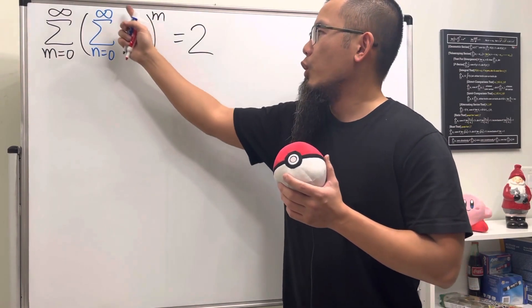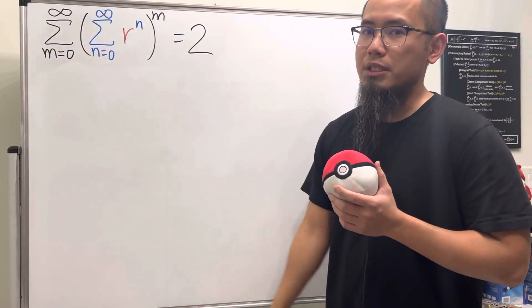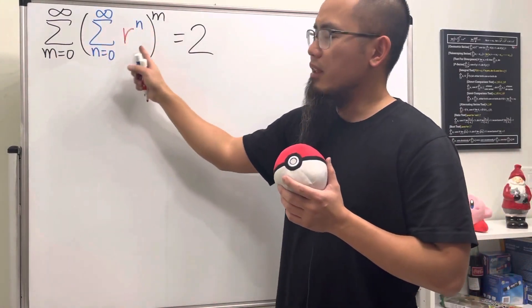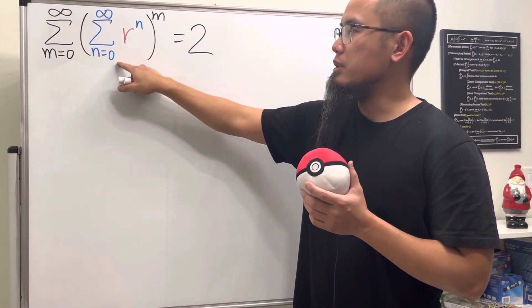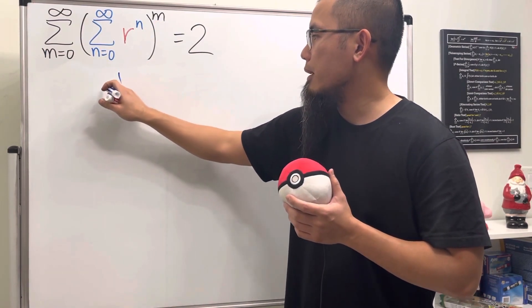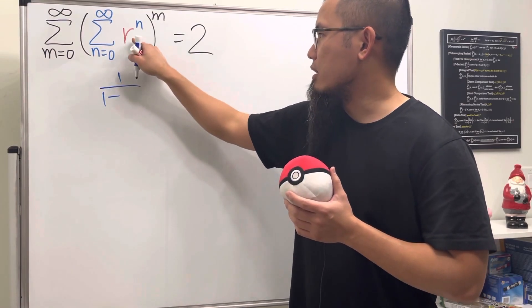In order for this to make sense, we need to have this right here being a convergent geometric series. Assuming that this right here does converge, it will converge to the first term, which is when you put zero into n and we'll just get r to the zero, which is one.